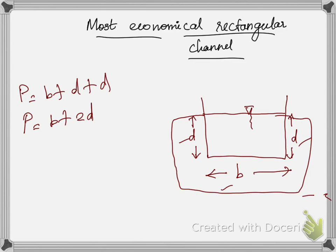What are the conditions for the most economical rectangular channel? The most economical section is also called the best section or most efficient section, because discharge passes through it for a given cross-sectional area and the resistance coefficient is also maximum. The main condition is discharge is maximum and wetted perimeter is minimum. Let us go for this derivation.